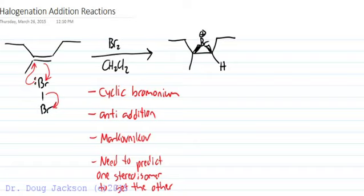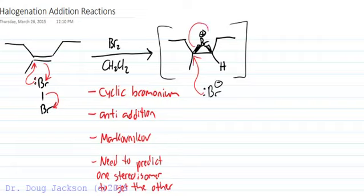And so in the second step of the mechanism, I'm going to attack the more substituted carbon with the bromide that I just formed. It's an anti-addition so it attacks on the backside, kicks up the bromine to the other carbon.